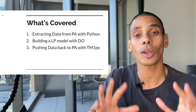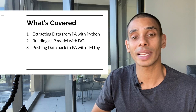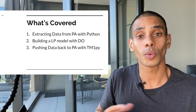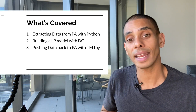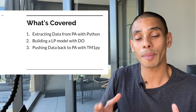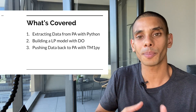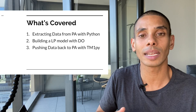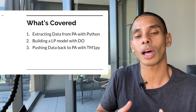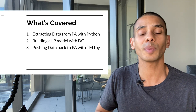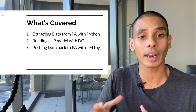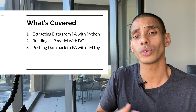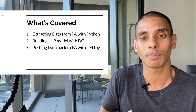In this final episode in the series on marketing optimization, we'll use Python to extract data out of our Planning Analytics cube. We built our Op Sales Analysis cube, and we're then going to prototype our linear programming model using the Python library docplex. Once we've run our optimization, we're going to push all our data back into Planning Analytics, all using TM1Py.